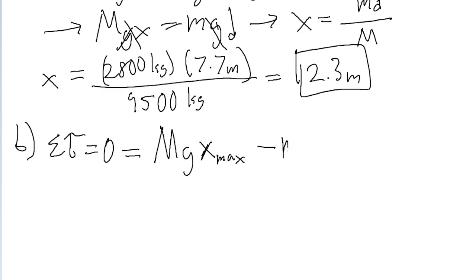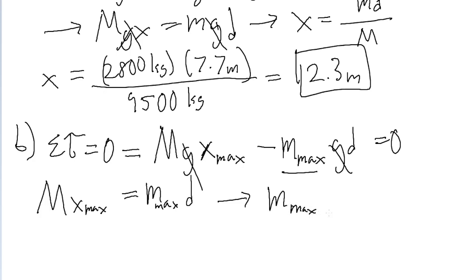Then minus the mass of the load. And this is another thing we're maximizing because the problem is asking us to find how much mass can we possibly carry. G is not going to change. D is not going to change. And yeah. So now we just want to solve this equation for m sub max. So we'll use our same algebra as before. These g's can cancel out. We can add m max d to both sides of the equation to make our math a little easier. So M x sub max is equal to small m sub max multiplied by d. And then we divide both sides of the equation by d to get m sub max on its own. So this is going to be equal to big M multiplied by x max divided by d.